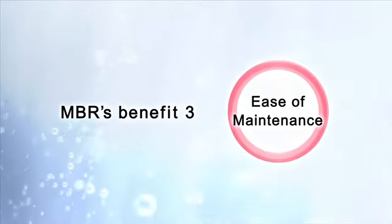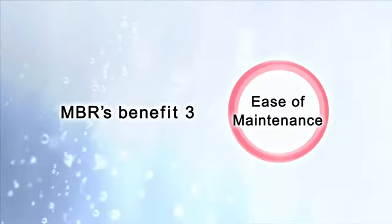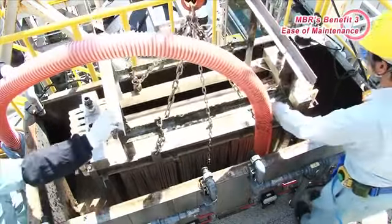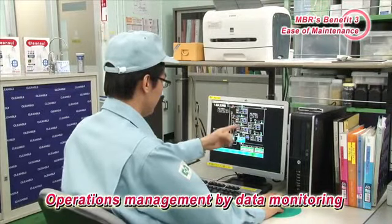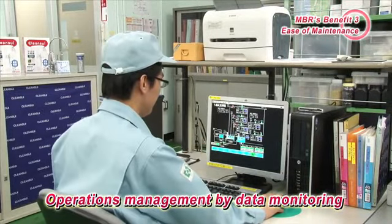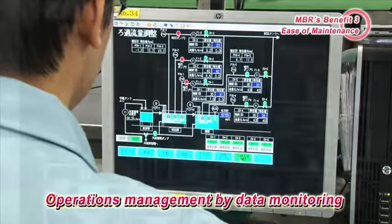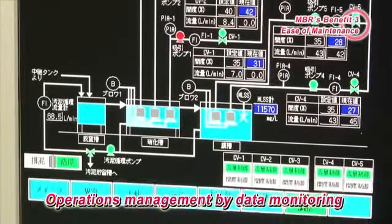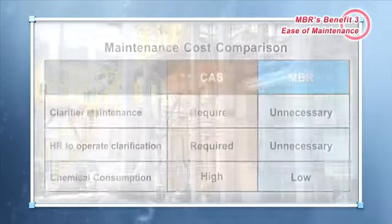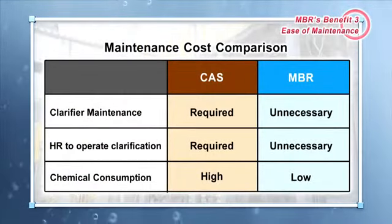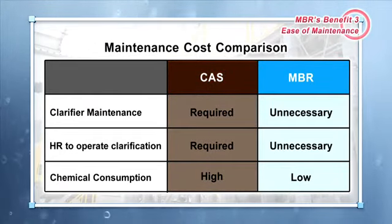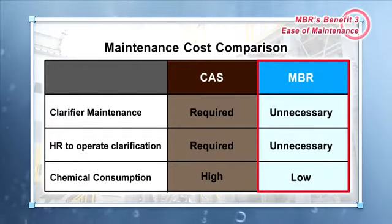Benefit 3: Ease of Maintenance. Since MBR separates liquids from solids using membranes, operations management can be done by monitoring data remotely from a control room. Therefore, the frequency of on-site maintenance can be reduced as well as staffing reductions. Unlike conventional methods, costs and maintenance associated with the settling tank are unnecessary, and personnel and chemical costs required to maintain the settling tank can be saved.